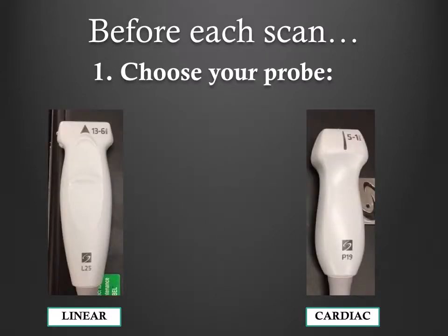First, choose your probe according to desired frequency and depth. For structures that are more than 6 centimeters deep, such as lung parenchyma, use the cardiac or low-frequency probe. For structures that are less than 6 centimeters deep, such as the pleura, use the linear or high-frequency probe.